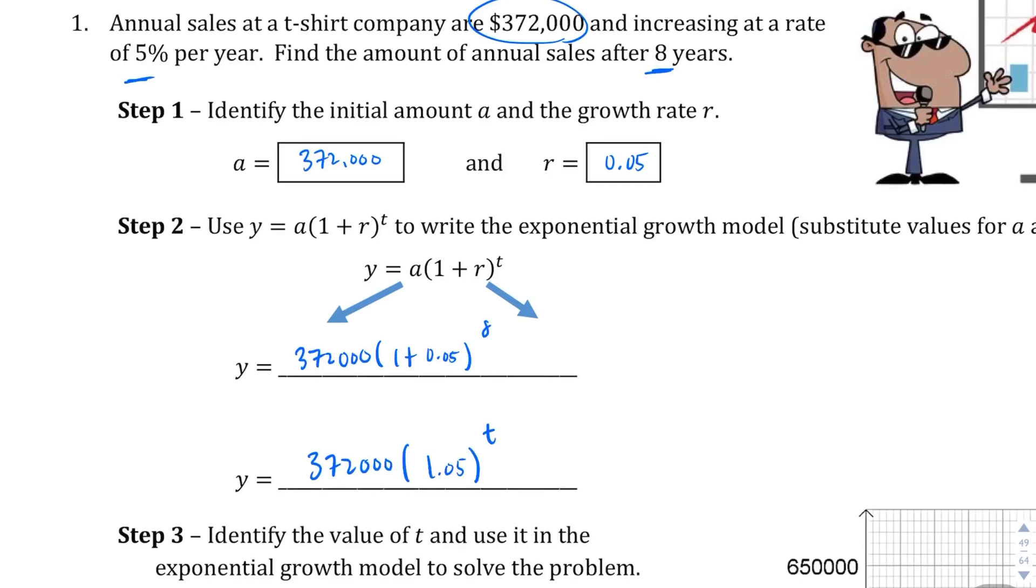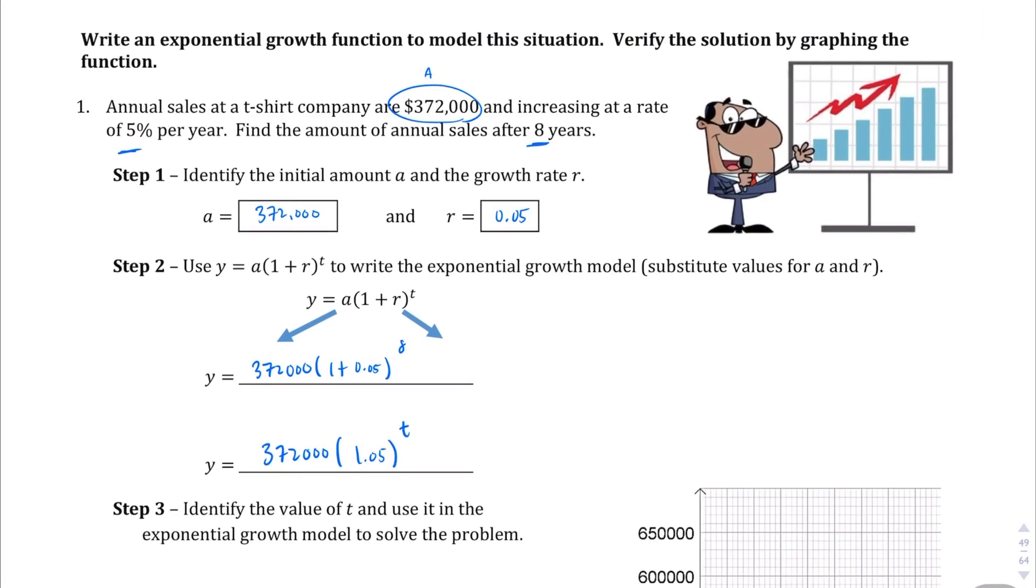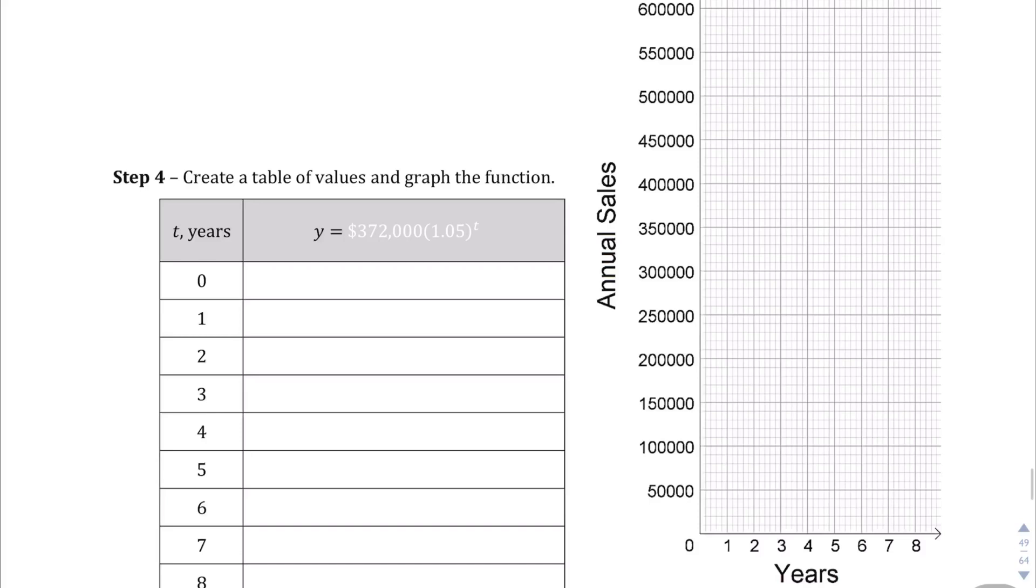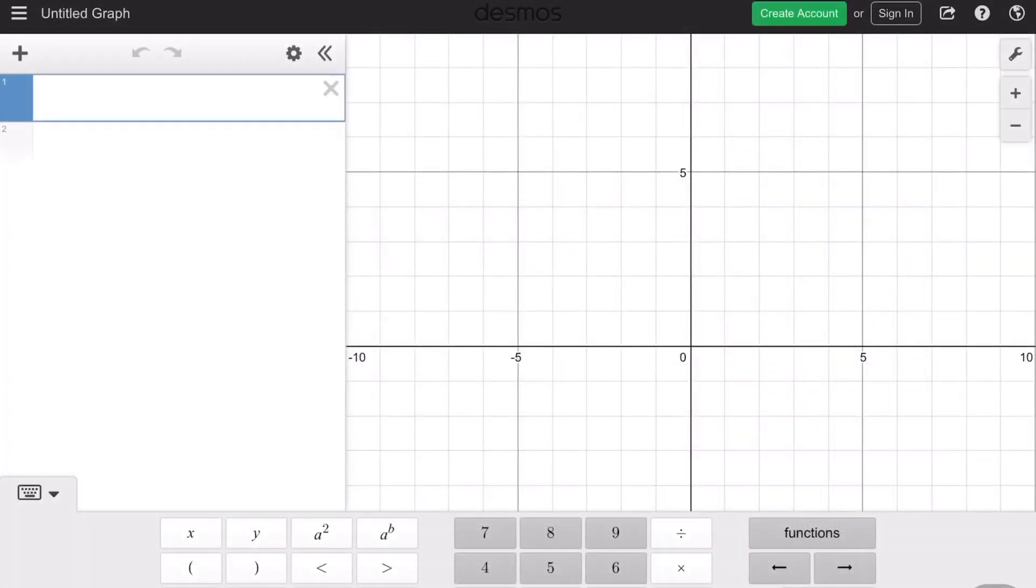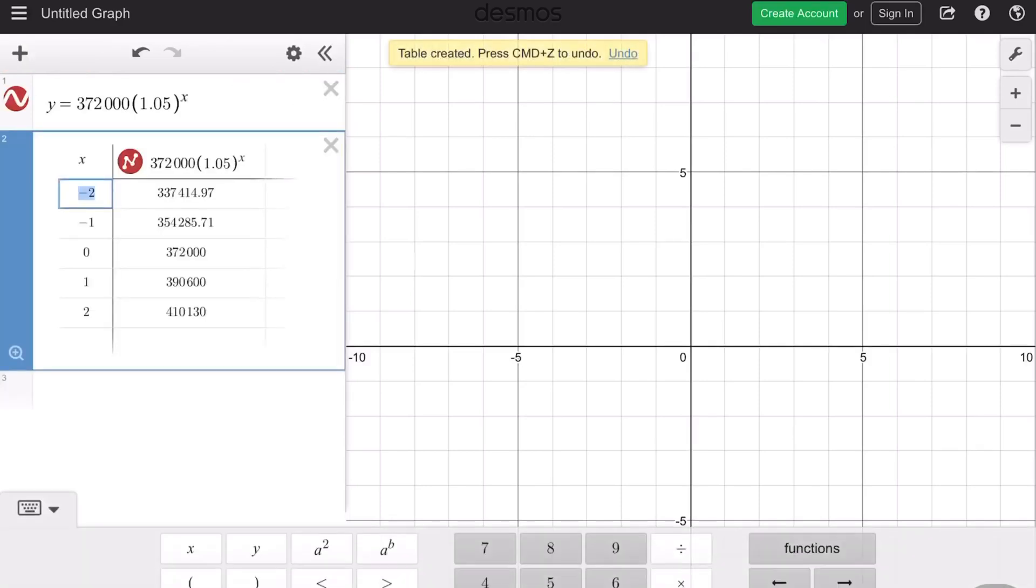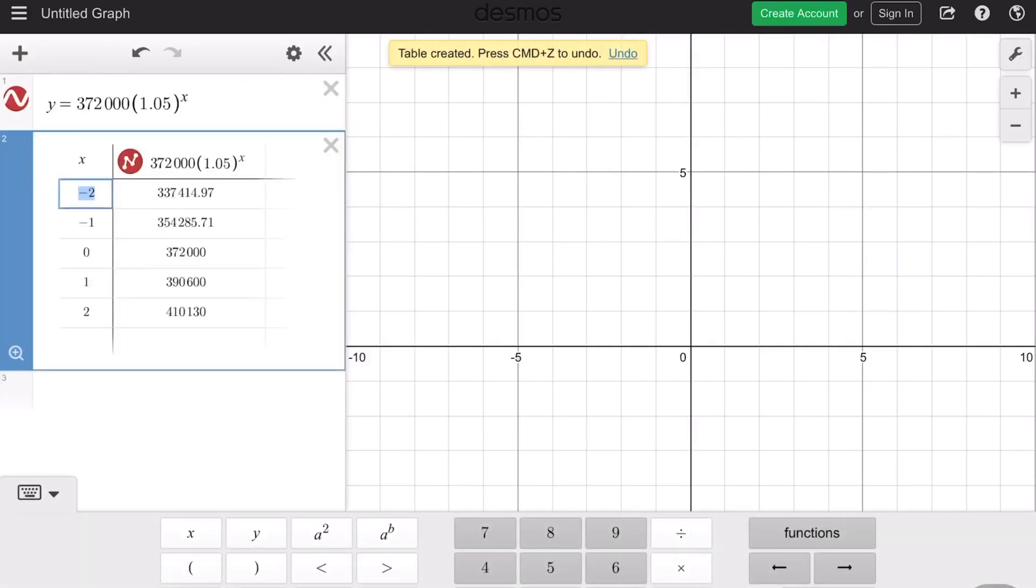Let's zoom out a little bit. And we're going to use our handy-dandy technology here to help us solve this, and I have Desmos ready to go. And we're going to fill in what we had. We had y equals 372,000 times, what was the rate, 1.05 to the power of x.